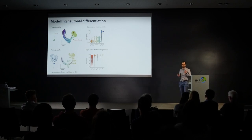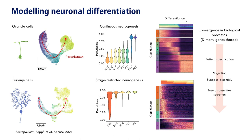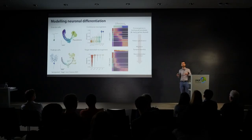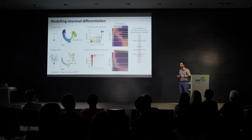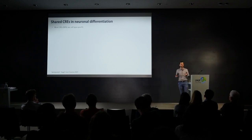Despite this difference in dynamics, when we look into the CREs that change accessibility during differentiation, we see a convergence in biological processes — starting with CREs close to genes associated with pattern specification, moving to migration, synapse assembly, and eventually neurotransmitter secretion. On top of this convergence, many of the target genes of these CREs are directly shared across multiple neuron types.